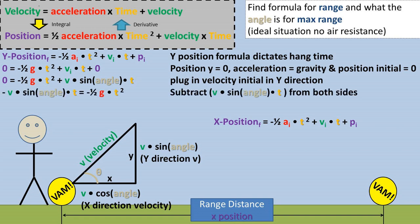Next, we'll subtract velocity times the sine of the angle times time from both sides of the equation. Then divide both sides by negative one-half times the gravity times time. This leaves us with time on one side of the equation. This time is the hang time formula.